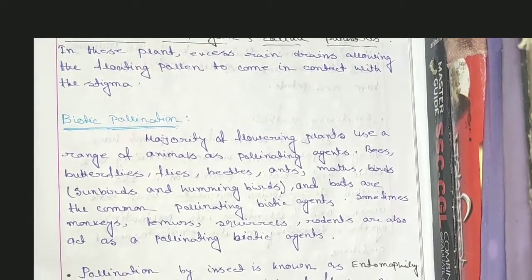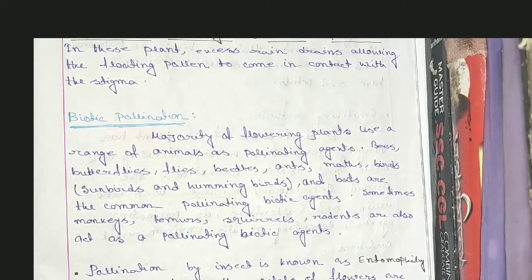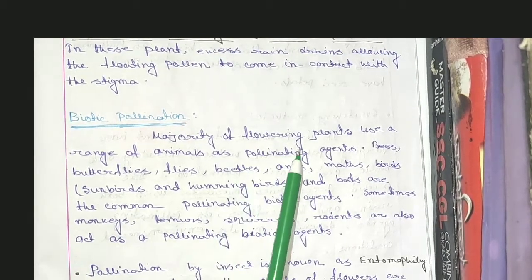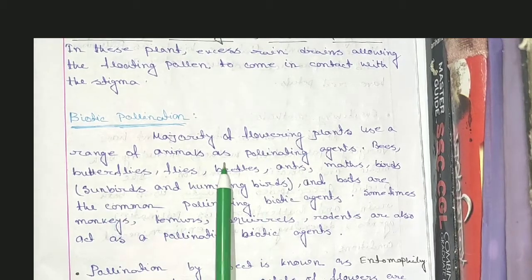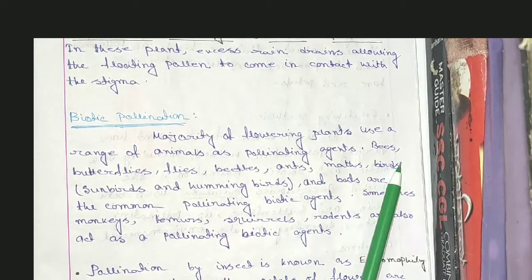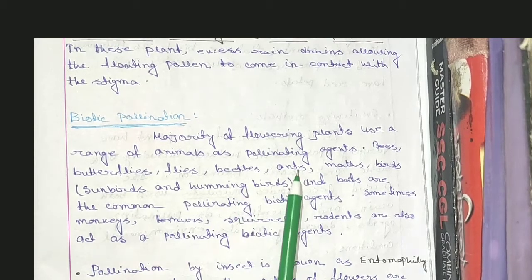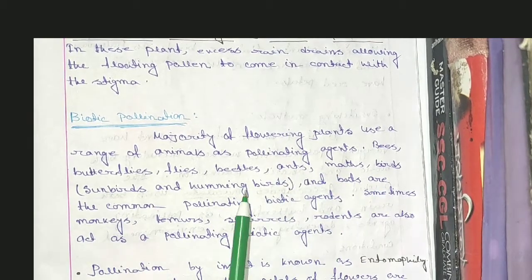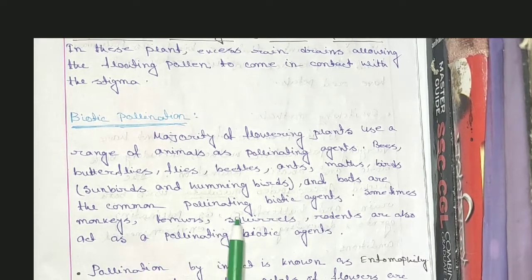Now, biotic pollination means pollination that occurs through living organisms. The majority of flowering plants use a range of animals as pollinating agents — bees, butterflies, flies, beetles, wasps, moths, birds (especially sunbirds and hummingbirds), and bats are the most common biotic pollinating agents.